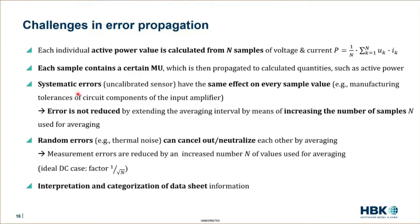This measurement uncertainty of each sample contains then some systematic errors and some random errors. So systematic error is, if you think about the manufacturing tolerance, perhaps a capacitor or resistance in the input amplifier of the data acquisition system is a bit too big or too small, and therefore the scaling or the offset is influenced. Then this error is the same or influences the measurement result on this individual channel for each sample in the same way.